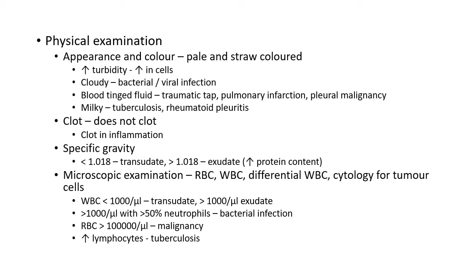WBC count of 1,000 cells per microliter is the cutoff between transudate and exudate: less than 1,000 per microliter indicates transudate; greater than 1,000 indicates exudate. A WBC count greater than 1,000 with more than 50% neutrophils suggests bacterial infection. RBC count greater than 100,000 cells per microliter is highly suggestive of malignancy, trauma, or pulmonary infarction. High percentage of lymphocytes suggests tuberculosis, viral infection, or lymphoma. The WBC pipette and Neubauer chamber are used similarly to blood counts.